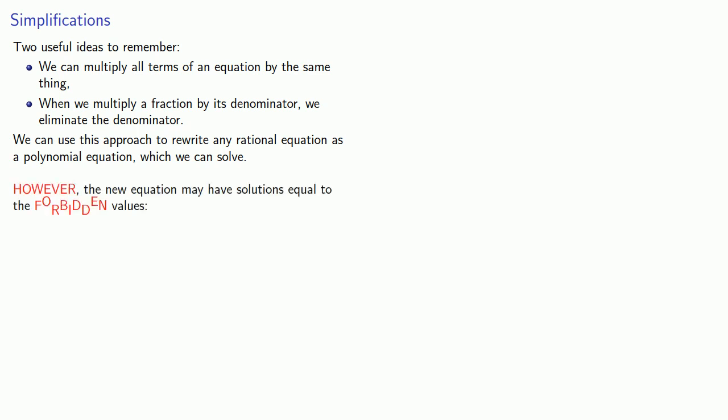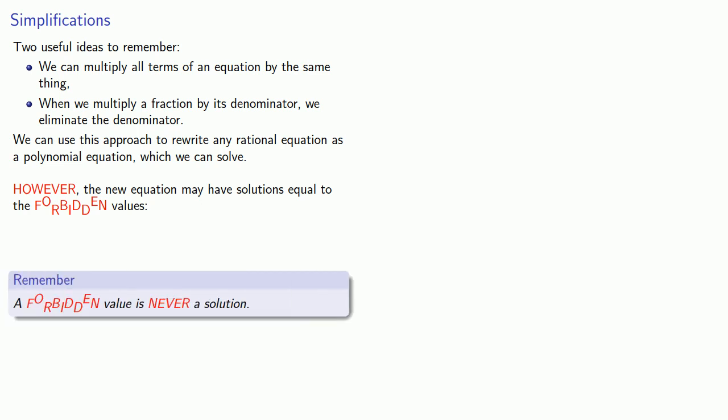However, the new equation may have solutions equal to the forbidden values. And the thing to remember is that a forbidden value is never a solution. So if our new equation does have some solutions equal to the forbidden values, these are extraneous solutions and should be omitted.